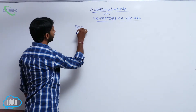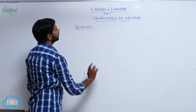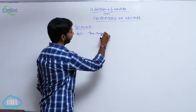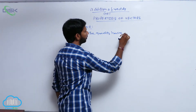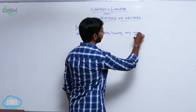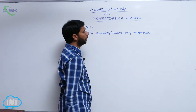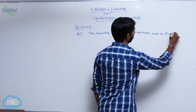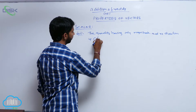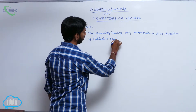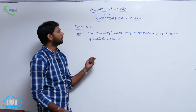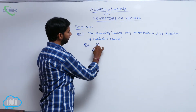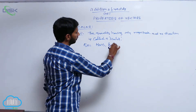First, what is the definition of a scalar? A scalar is a quantity having only magnitude and no direction. Some examples are mass, length, and so on.